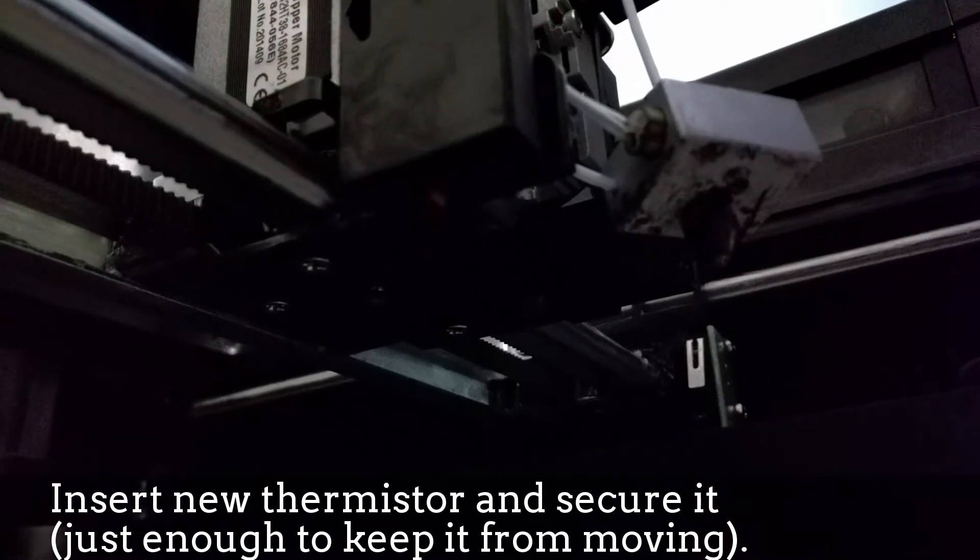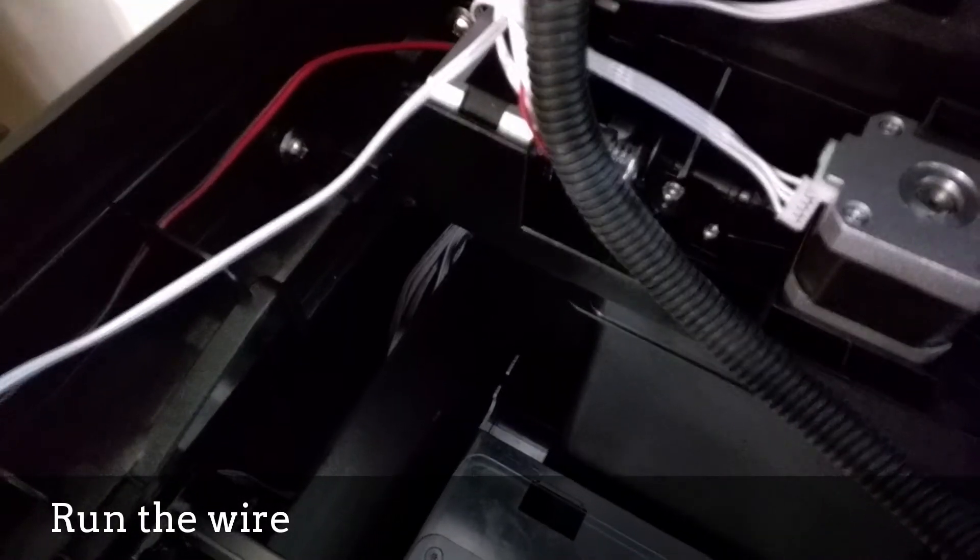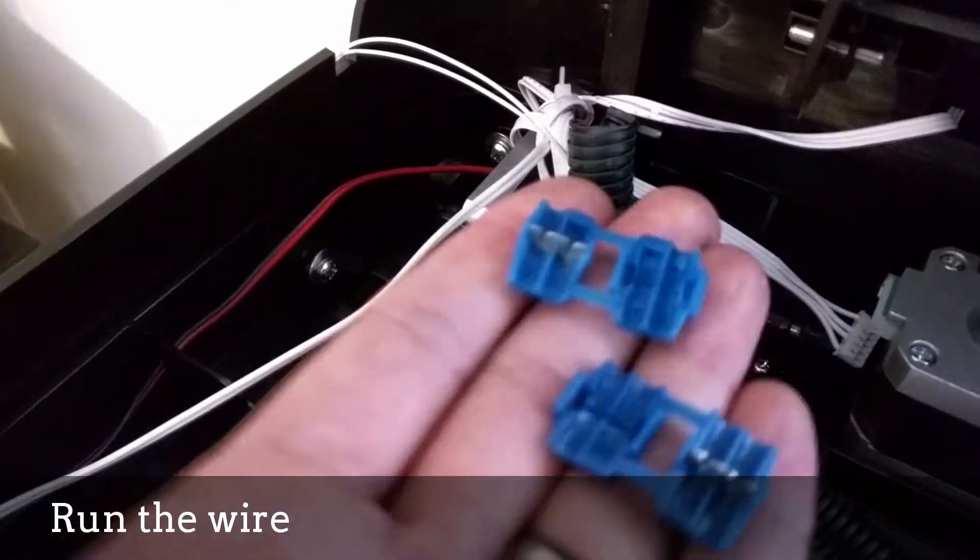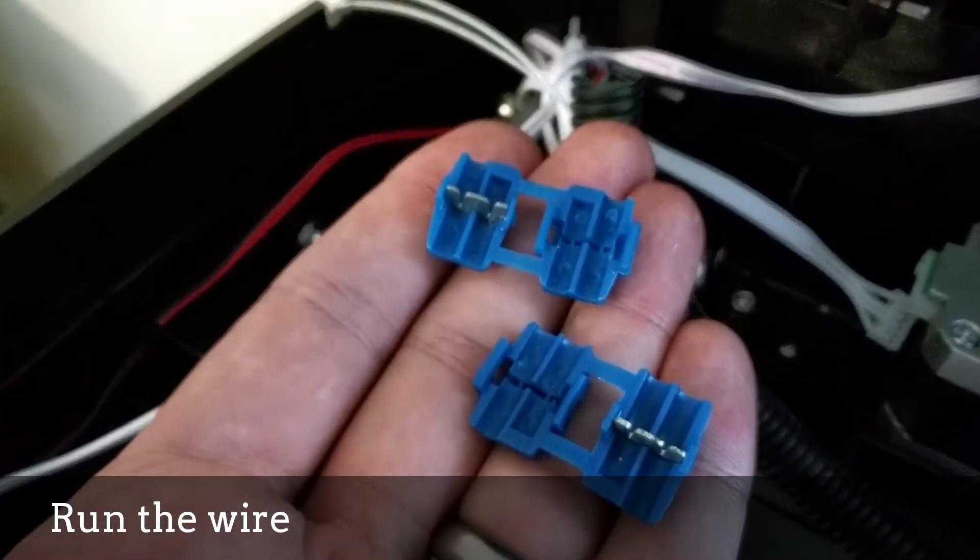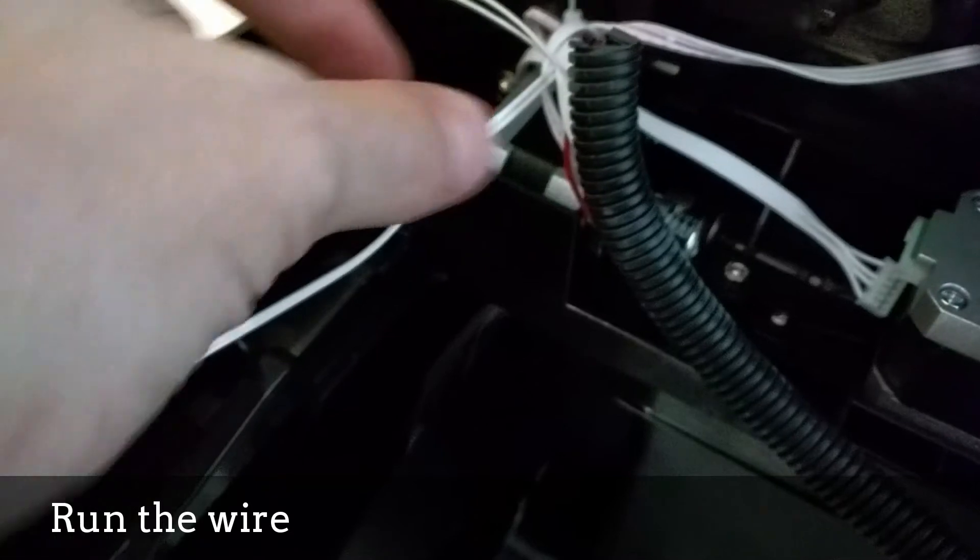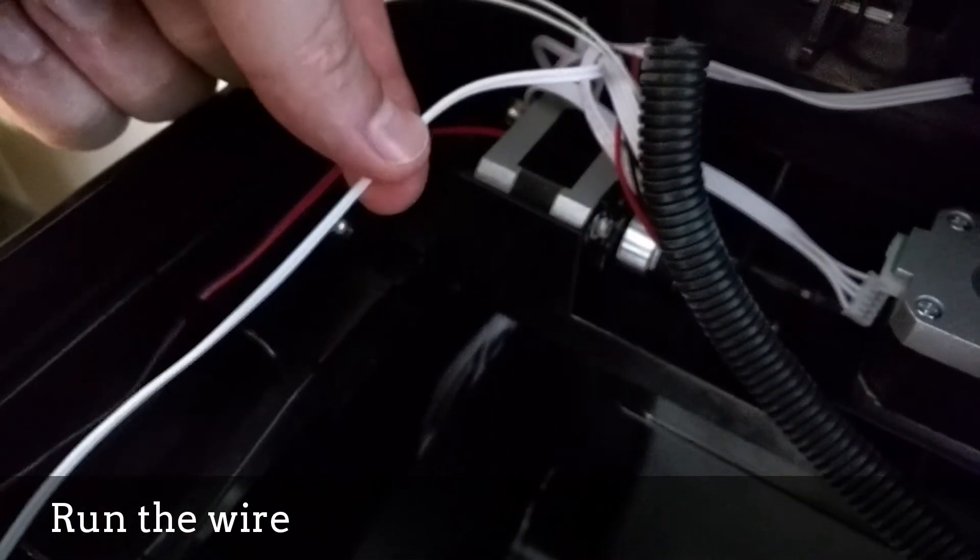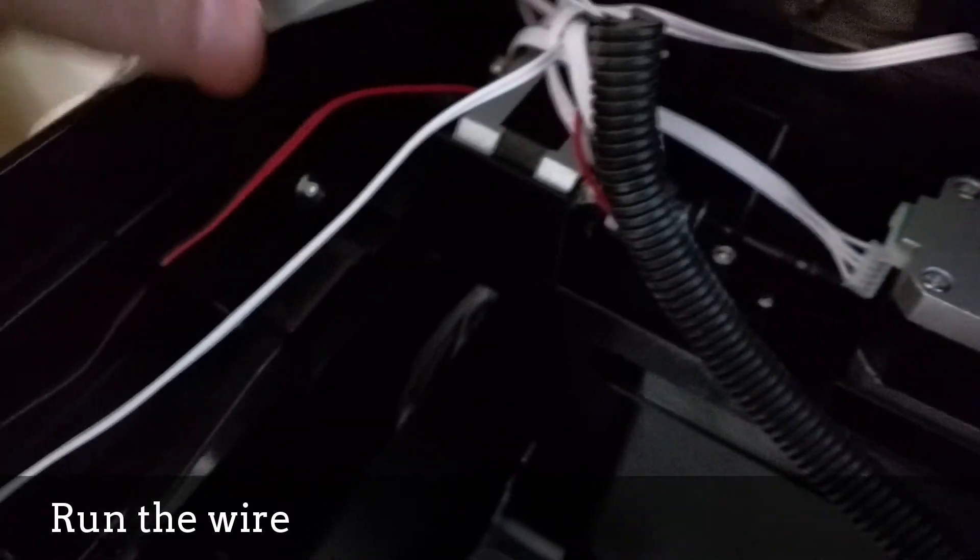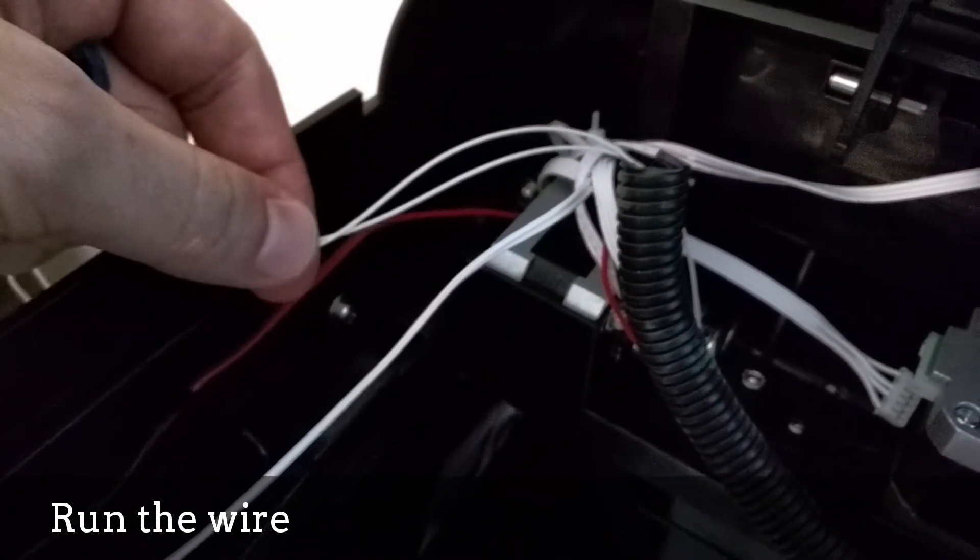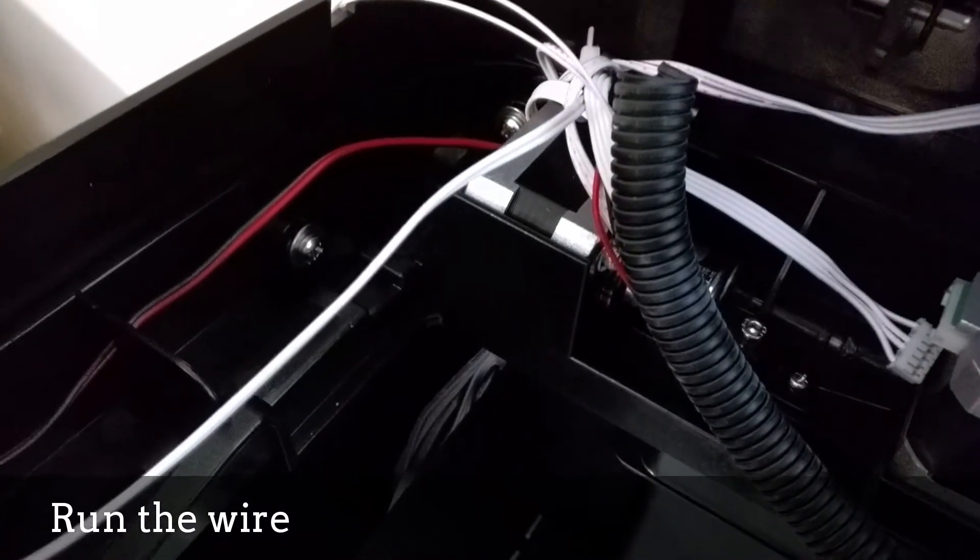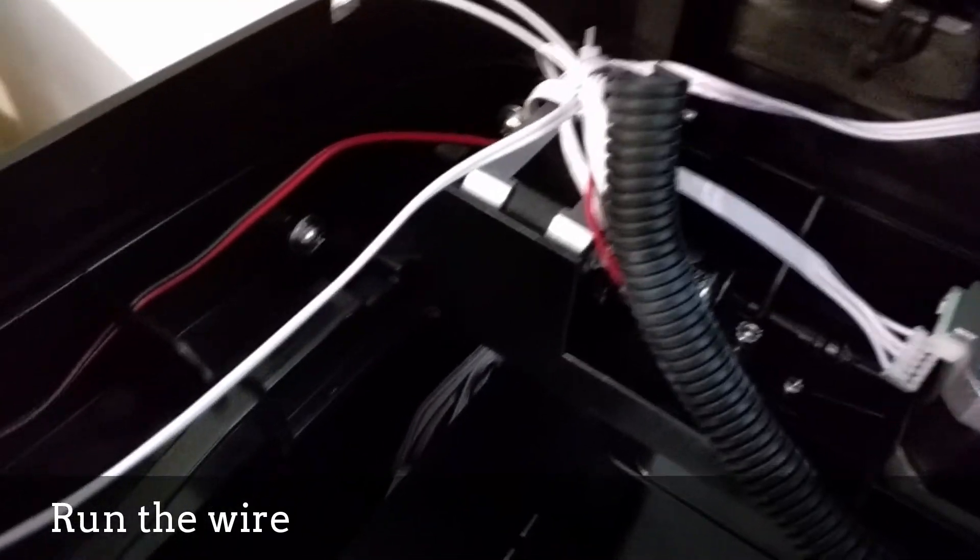Then we can finish feeding it back to the motherboard. So on second thought, instead of going back to the motherboard with this new thermistor lead, I'm gonna cut the old wire around here to give it some slack and then cut the new one appropriately too so I can terminate them right here. So in the event that I have to replace this thermistor again, I won't have to go through the trouble of running it all the way back down to the bottom.